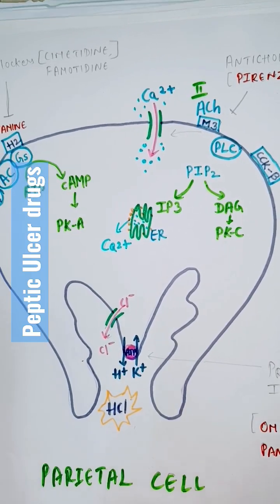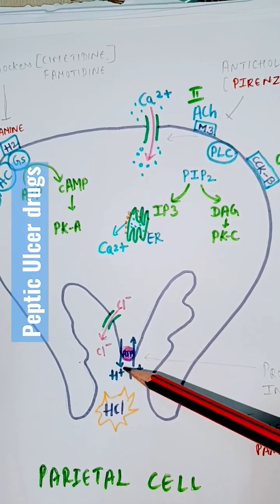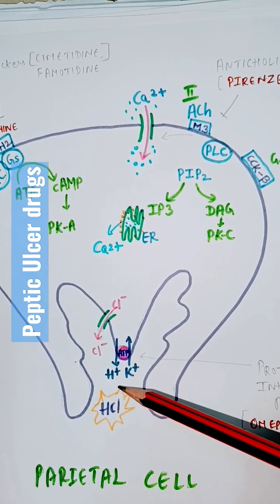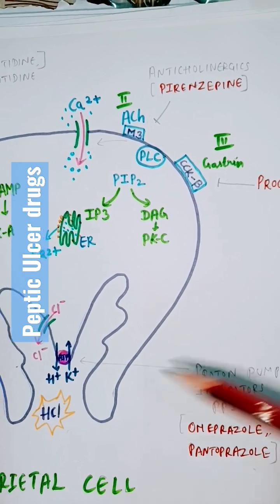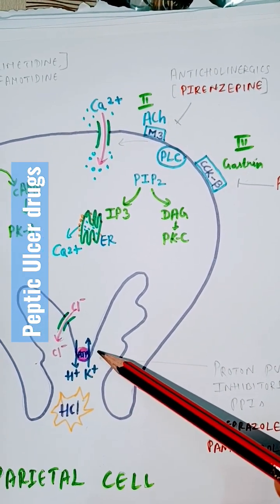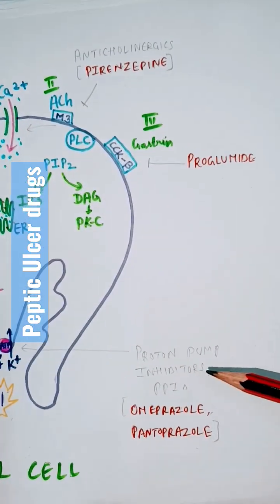This is a parietal cell. Here you can see on the apical side of a parietal cell there is a H plus K plus pump which pumps H plus into and produces HCL. This is your proton pump. So this can be inhibited to reduce HCL production that is in peptic ulcer disease.